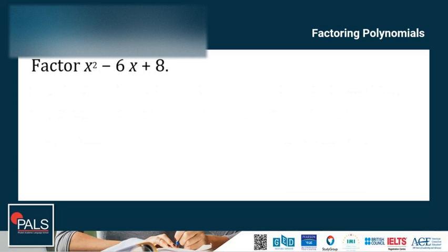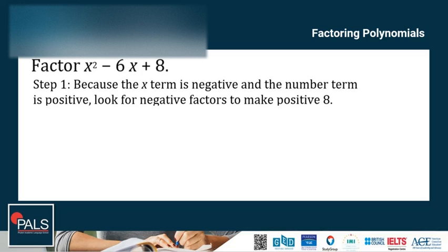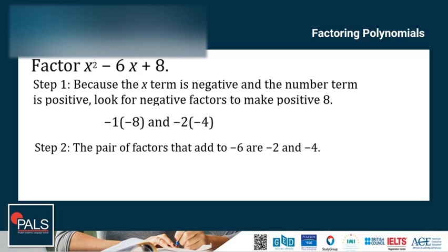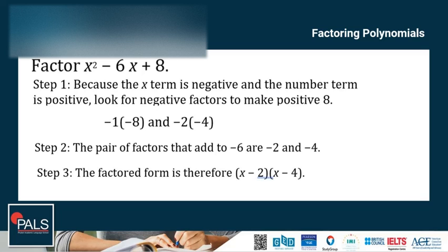Another example: factor x squared minus 6x plus 8. Step 1: because the x term is negative and the number term is positive, look for negative factors that make positive 8 — so both factors should be negative: negative 1 and negative 8, and negative 2 and negative 4. Step 2: the pair that adds up to negative 6 is negative 2 and negative 4. Step 3: the factored form is (x minus 2)(x minus 4).